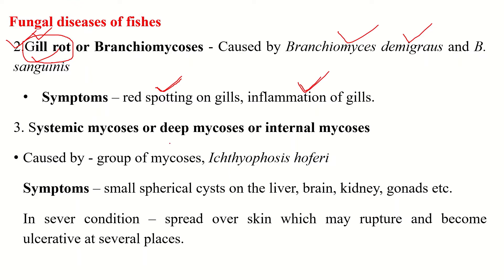The third type of fungal disease is systemic mycosis, also called deep mycosis or internal mycosis. This disease is caused by a group of fungi like Ichthyophonus hoferi. Ichthyophonus hoferi can cause systemic mycosis. It is characterized by a swinging movement of the infected fish, and the fungus enters into the body of the host along with food.